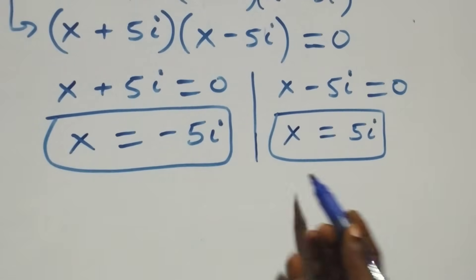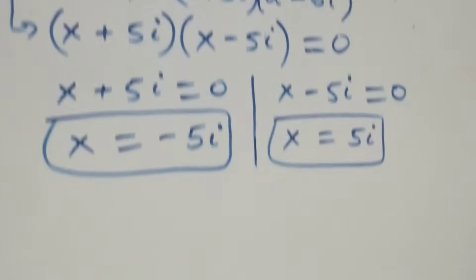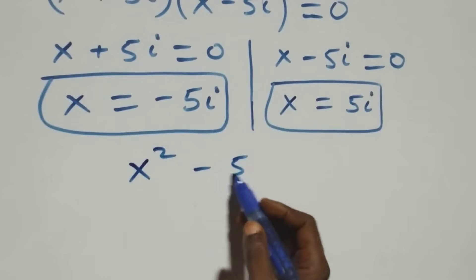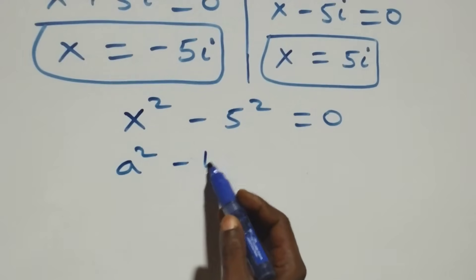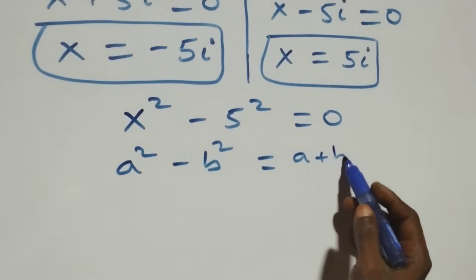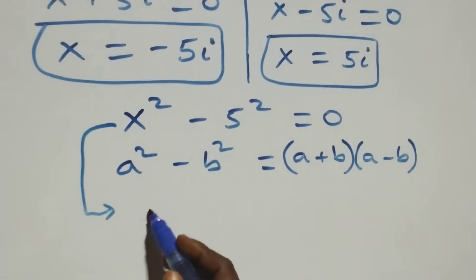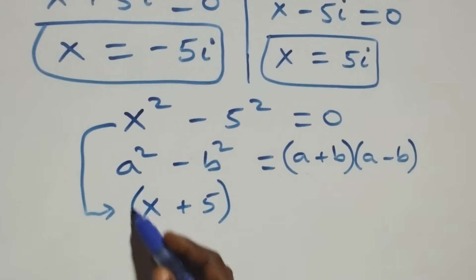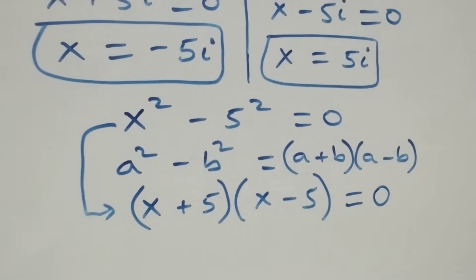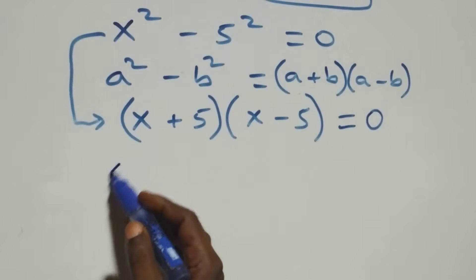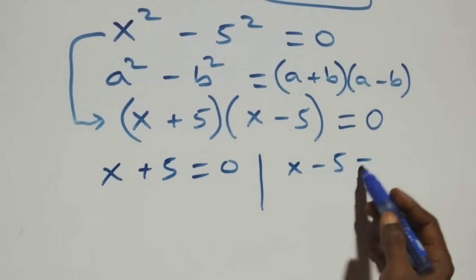Solving the second case, x squared minus five squared equals zero. This also follows the difference of two squares: a squared minus b squared equals (a + b)(a - b). So this becomes (x + 5)(x - 5) equals zero. We have two possible cases: x plus five equals zero, or x minus five equals zero.